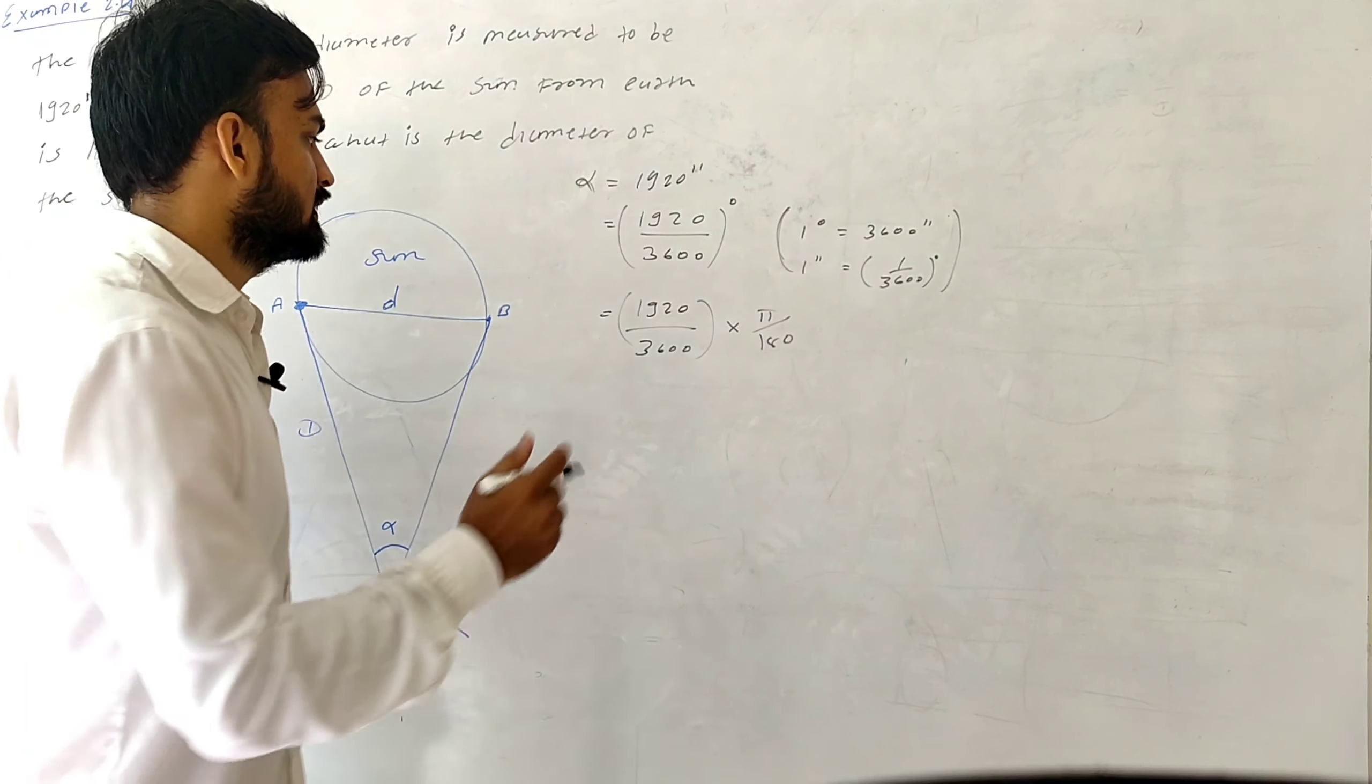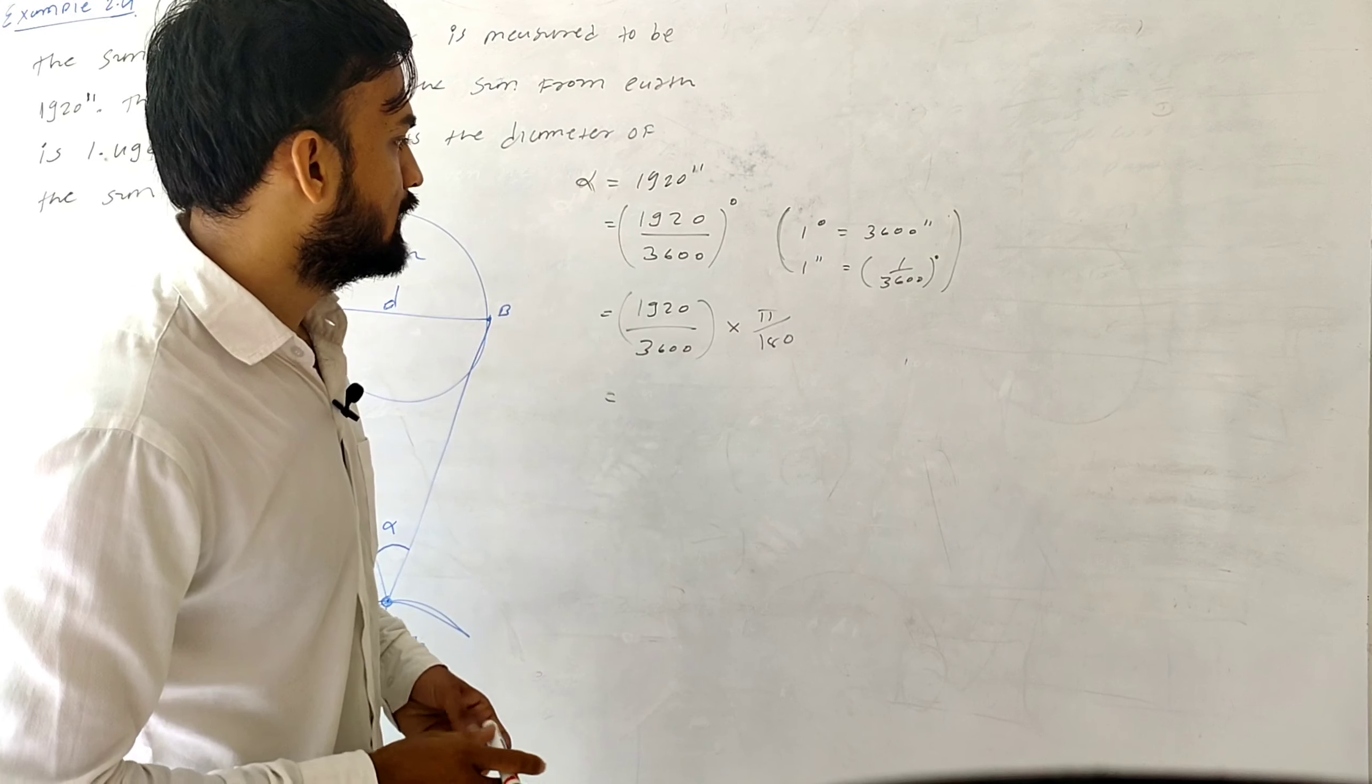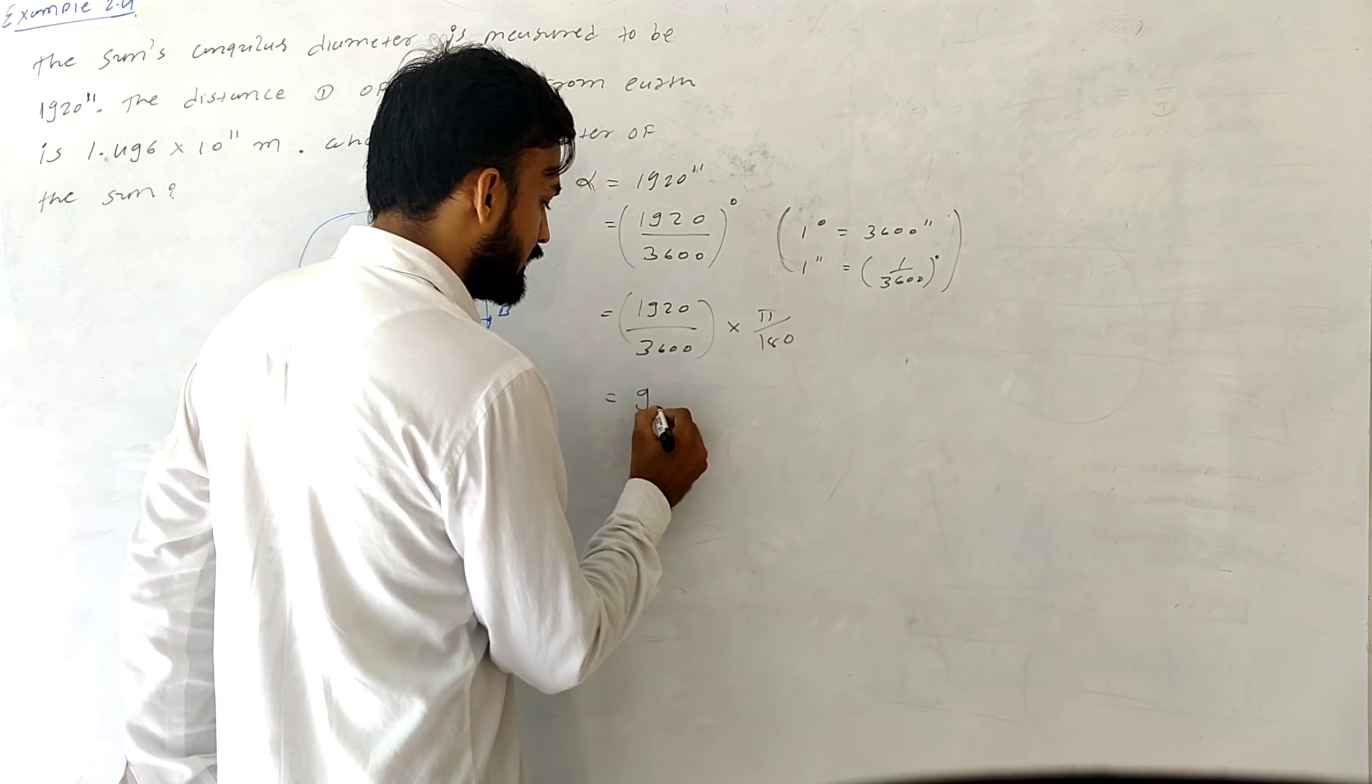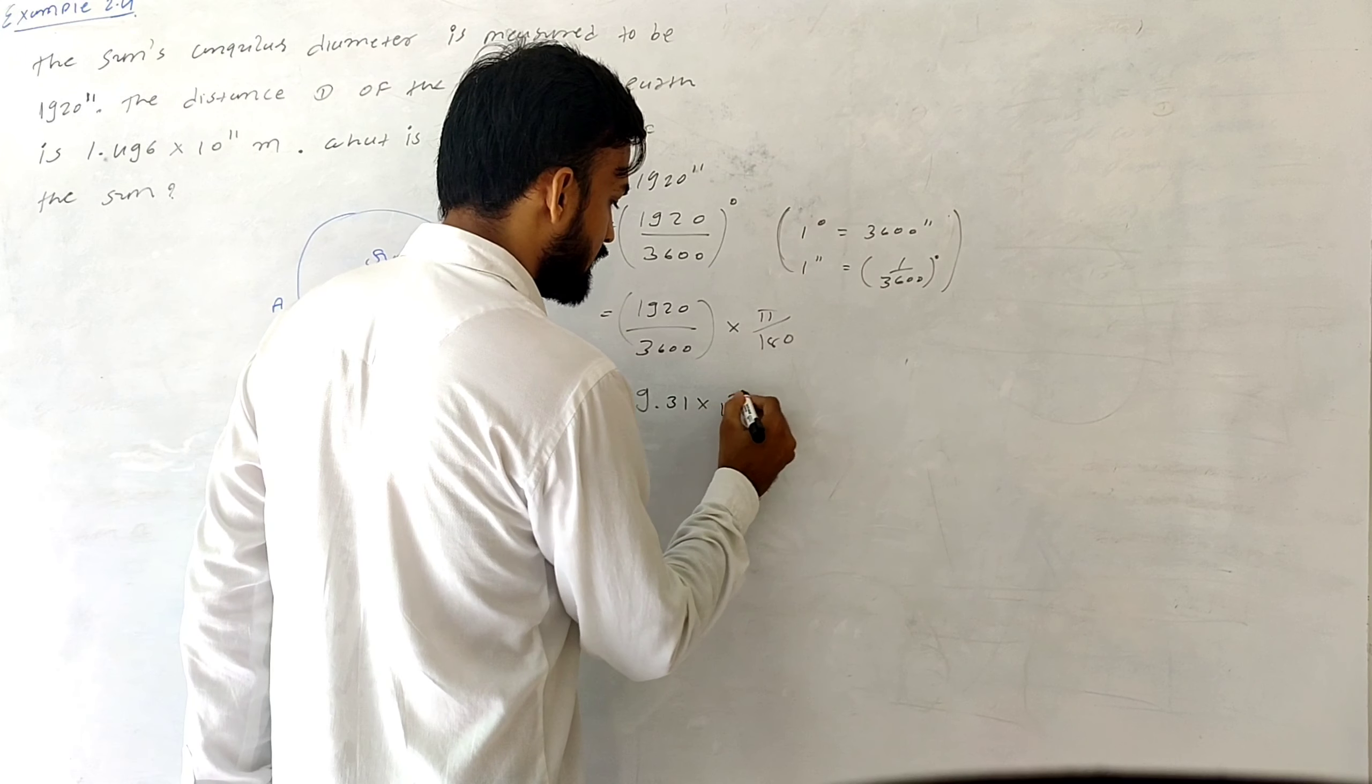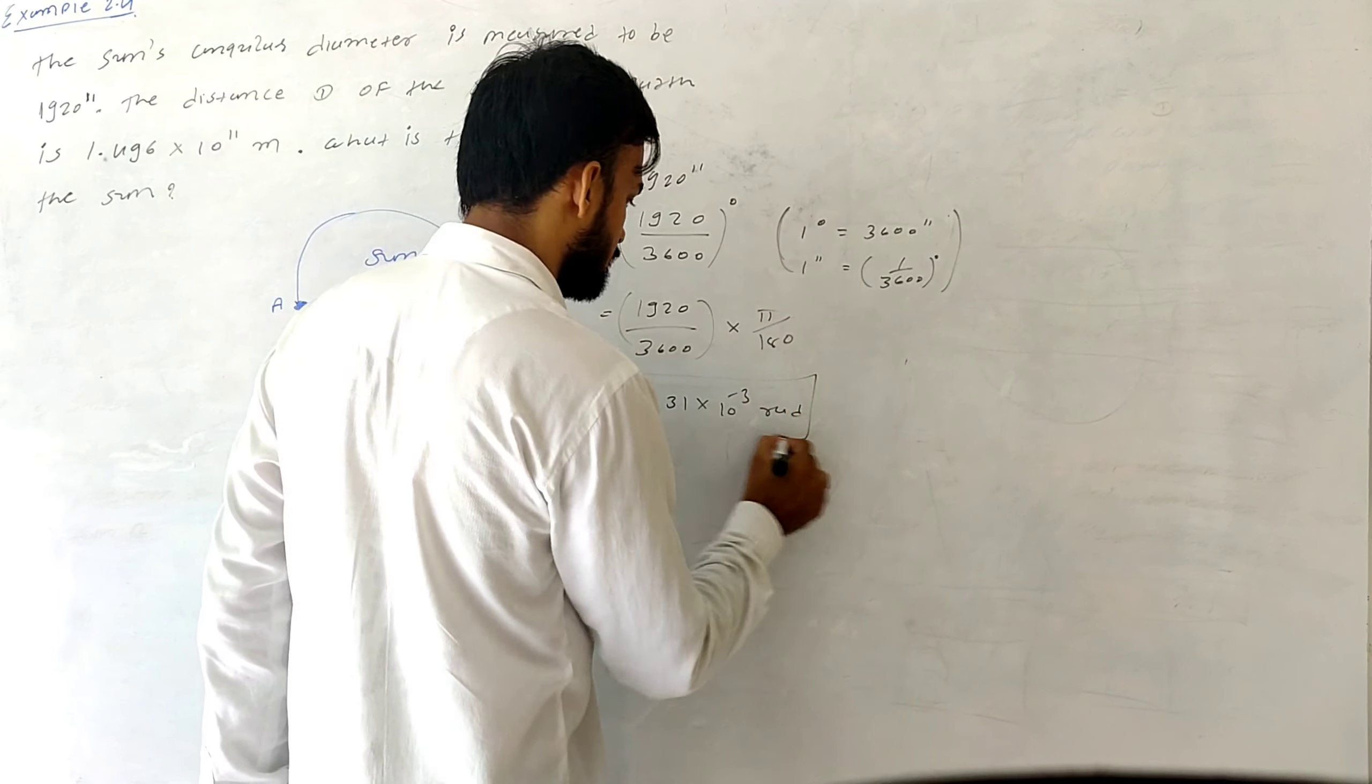So after simplifying this term and putting the value of π which is 3.14, I will get the answer 9.31 × 10^-3 radians. So this is alpha in radians.